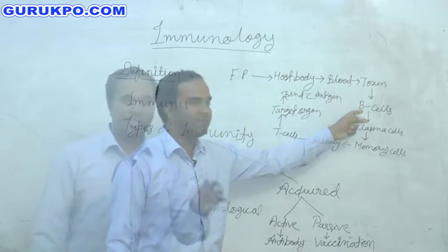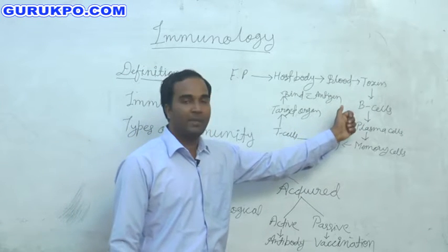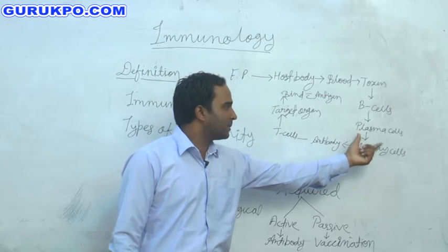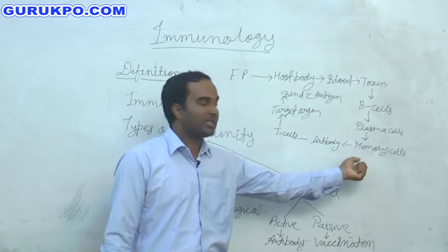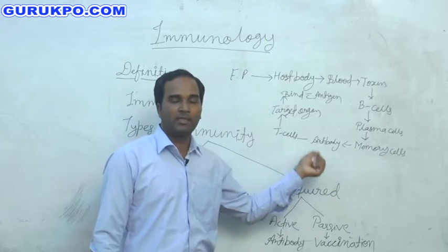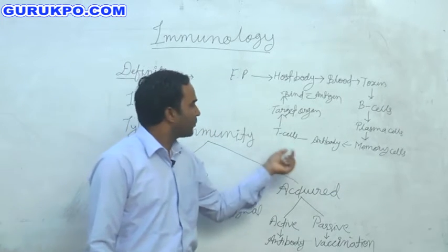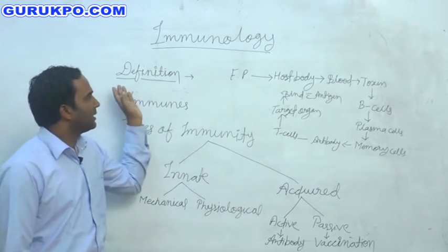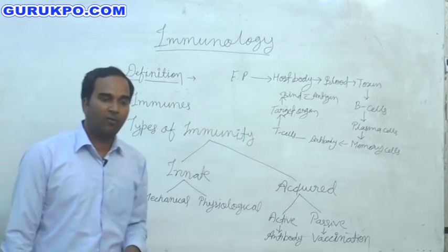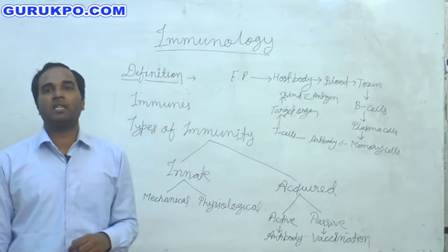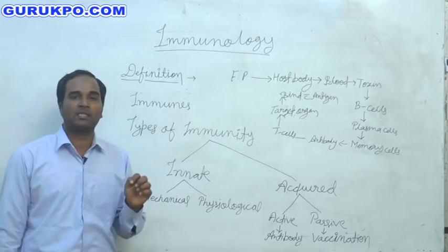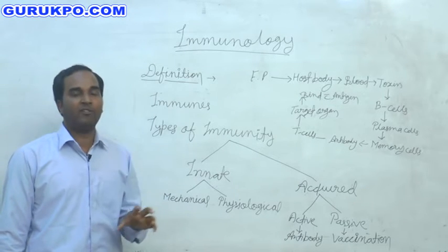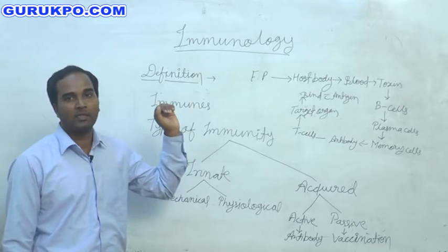Then the B cell — that is, the B lymphocyte — in the blood gets activated and multiplies as a plasma cell. This plasma cell changes into a memory cell and makes an antibody. This antibody, with the help of T cells, goes to the target organ and binds to the foreign particle. This is the antigen — a toxin that negatively affects the host body.